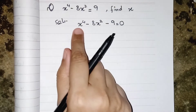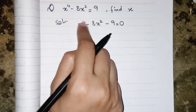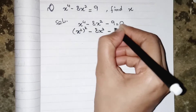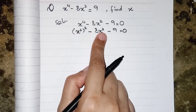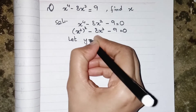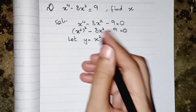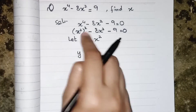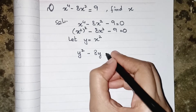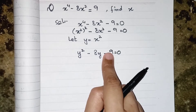Now we have to convert this quartic equation into a quadratic equation. For doing that, we split the power 4 into (x²)² minus 8x² minus 9 equals 0. This is still in quartic form, so we substitute y = x². Wherever we have x², we put y, giving us y² minus 8y minus 9 equals 0, which is now a standard quadratic equation.